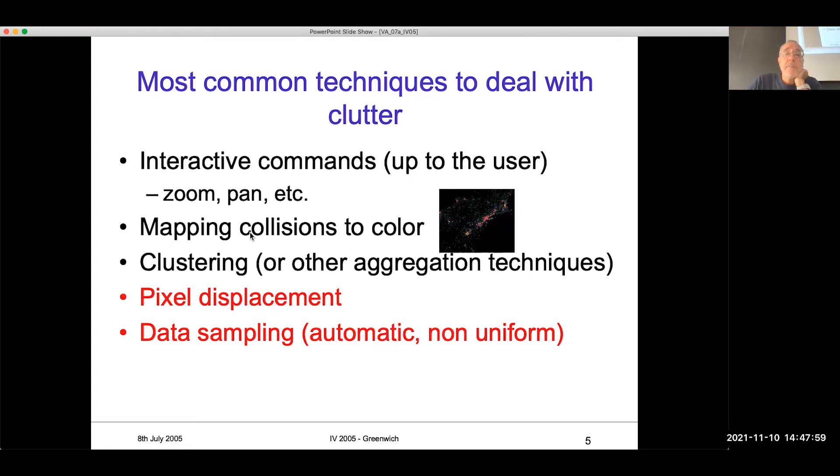And I did that still with Enrico. Mapping collision to colors. Maybe you remember the example of the USA, in which we have some color scale for doing that. Or you can do for clustering. Instead of representing all the points, you represent a cluster. A single point represents a cluster of points. It is used also in network analysis.